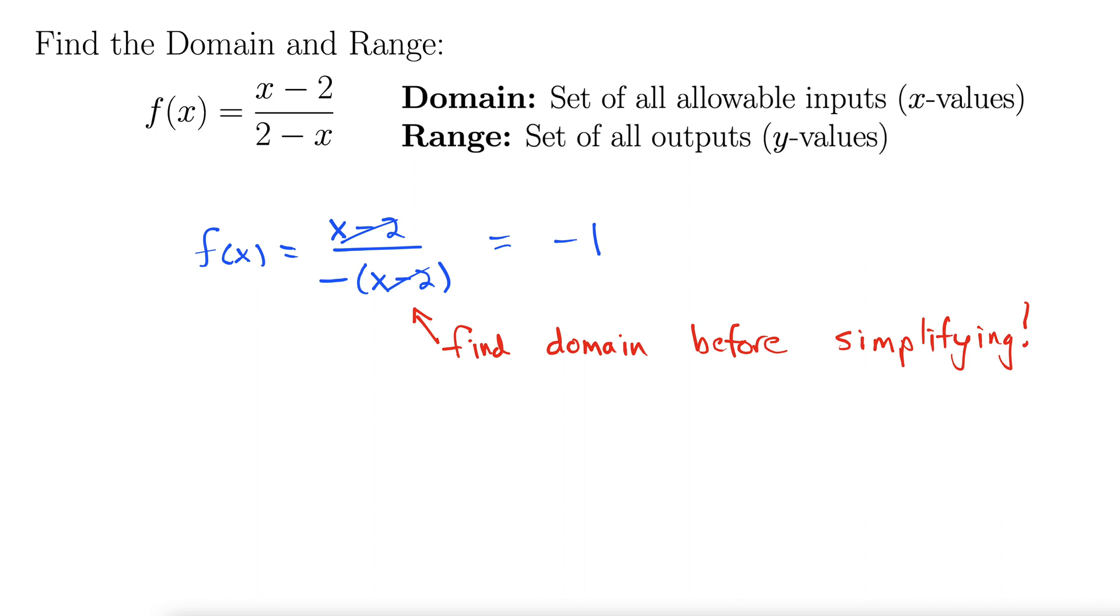A good way to approach domain in a function like this is to find the x values that are not allowed. We know that we can't have 0 in the denominator. So this denominator cannot equal 0.